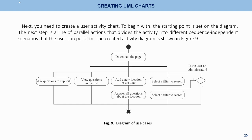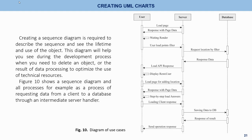Creating UML charts. Next, a user activity chart was created, starting with a starting point on the diagram. The next step involves a parallel action line that divides the activity into different sequence-independent scenarios that the user can perform. The activity diagram is shown in Figure 9. A sequence diagram was also created to describe the sequence and see the lifetime and use of objects, helping identify when to delete an object or result of data processing to optimize technical resources. Figure 10 shows the sequence diagram, including a process of requesting data from the client database through an intermediate server handler.